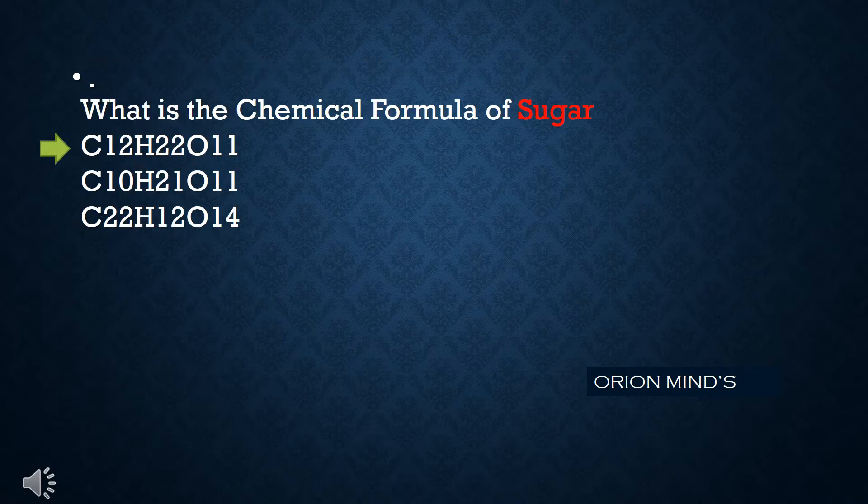What is the chemical formula of sugar? The answer is C12H22O11.